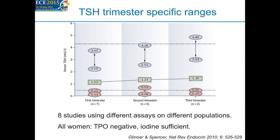This is significantly lower than what would be the upper limit of most reference ranges, which would be around 4 or 4.5 milliunits per liter. Importantly, this was done in women who do not have a predisposition to thyroid autoimmunity — they are TPO antibody negative — and from iodine-sufficient populations.